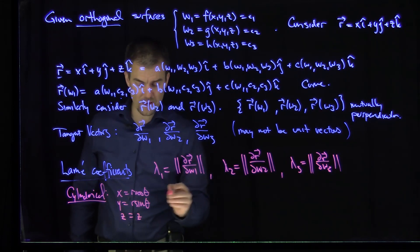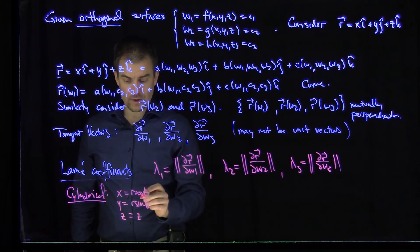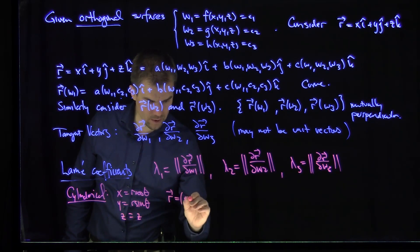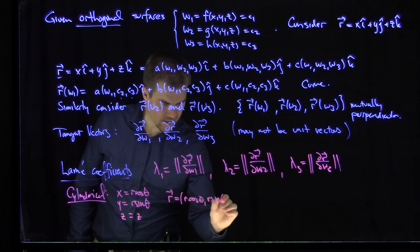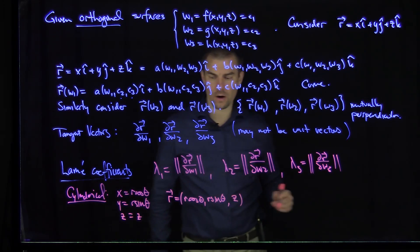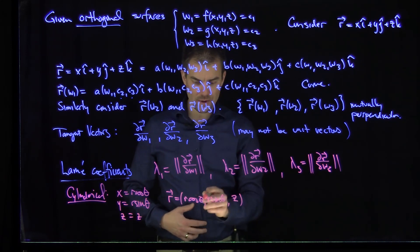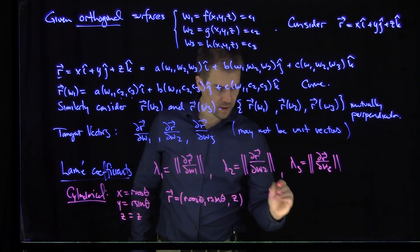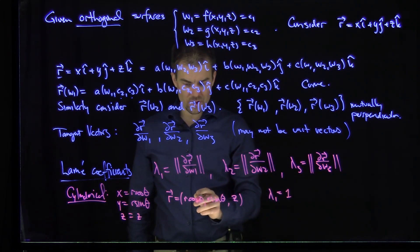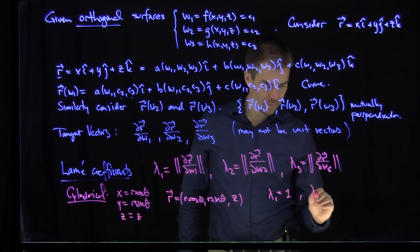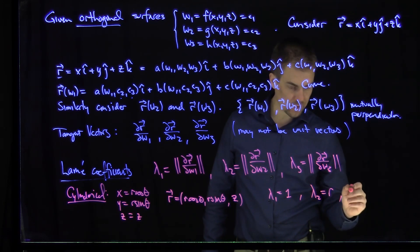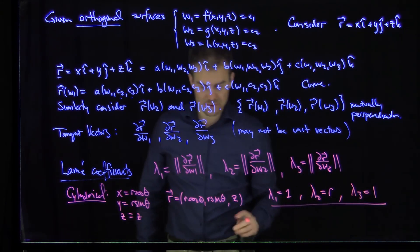So our vector field of position is going to be (r cosθ, r sinθ, z). The partial derivative with respect to r gives (cosθ, sinθ, 0), so λ1 = √(cos²θ + sin²θ) = 1. The partial derivative with respect to θ gives λ2 = r. And the partial derivative with respect to z gives λ3 = 1. So those are the Lamé coefficients in cylindrical coordinates.